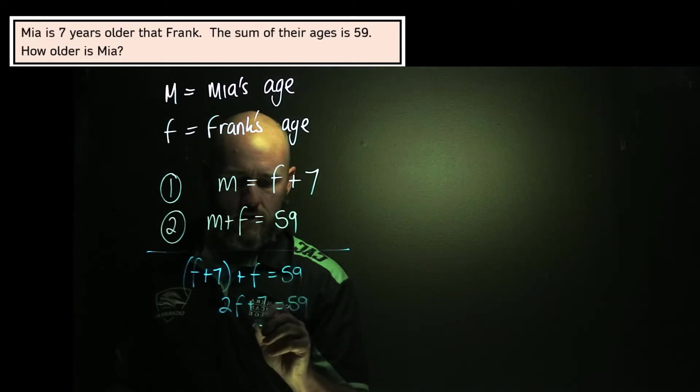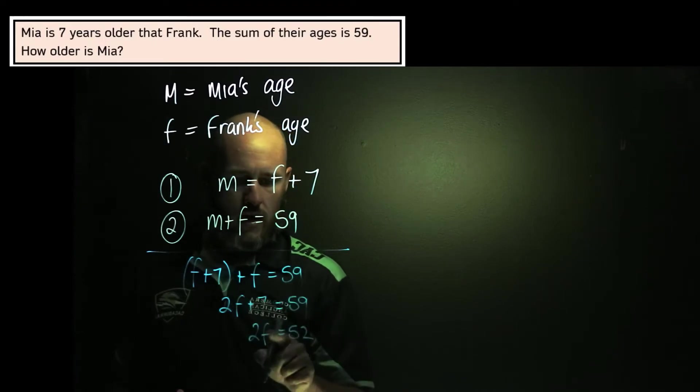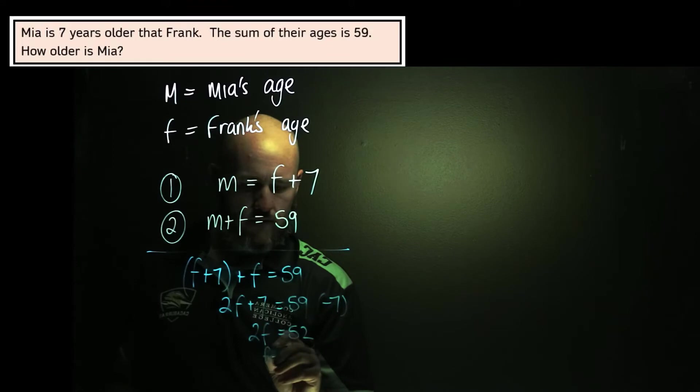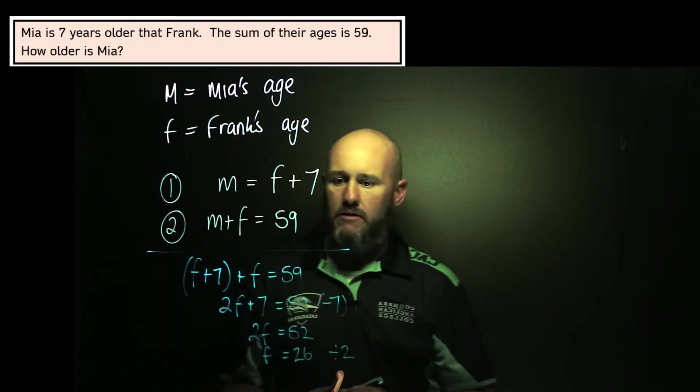And that means that 2F equals 52. I've just subtracted seven from both sides, of course. And therefore F, dividing by two, is 26.